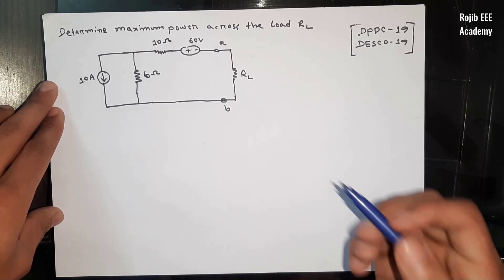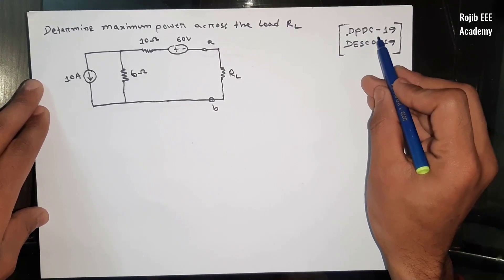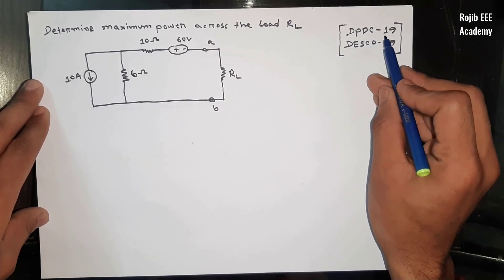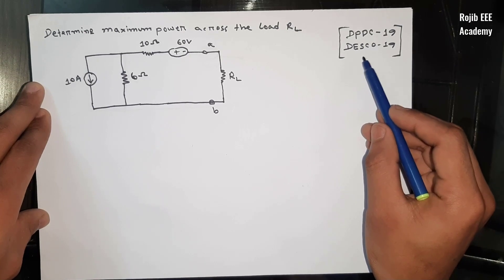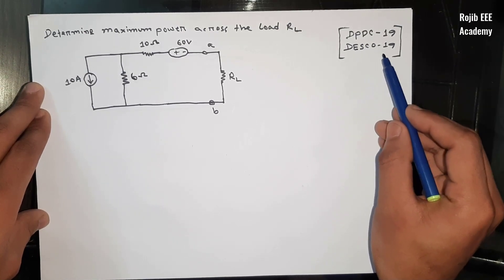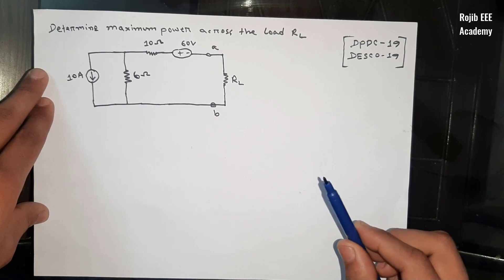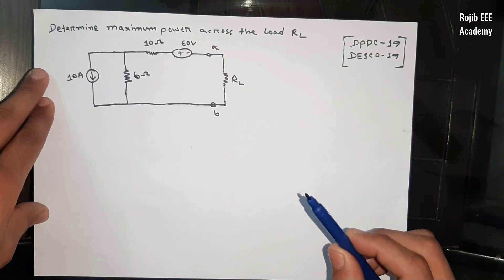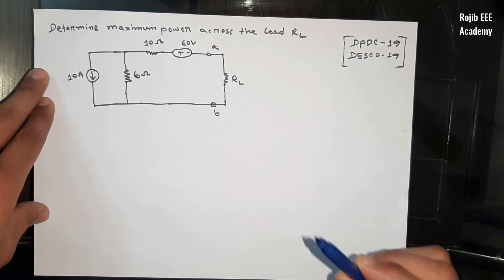There is a problem from DPDC — the big power distribution company — drop exam 2019. And a problem from DESCO — the big electric supply company — drop exam 2019. And a problem from EGCB — Electricity Generation Company of Bangladesh — drop exam 2019.